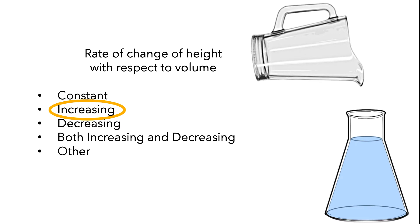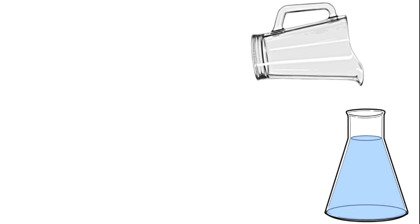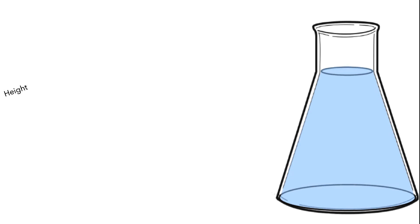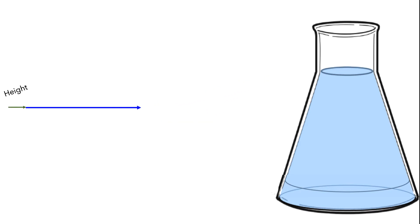Let's think about why this is. First, we'll zoom in so we can see the flask in a bit more detail. Next, I'll represent the height of the water in the flask. I'll use an oval to show the water that was in the flask before starting to pour. I'll represent the initial height using a green arrow, and the change in height using a blue line. Next, I'll represent the volume of the water that gets added to the flask using a red arrow.